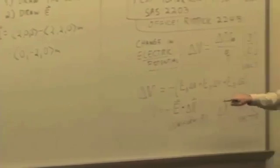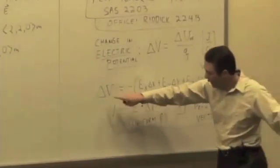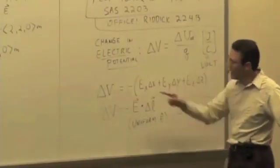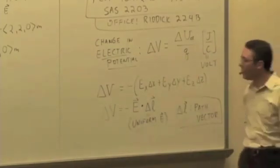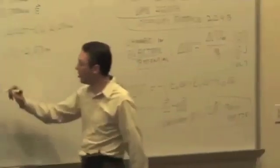The dot product says, or the change in potential is the negative of the dot product of the electric field and the path vector. So we have a negative out front.